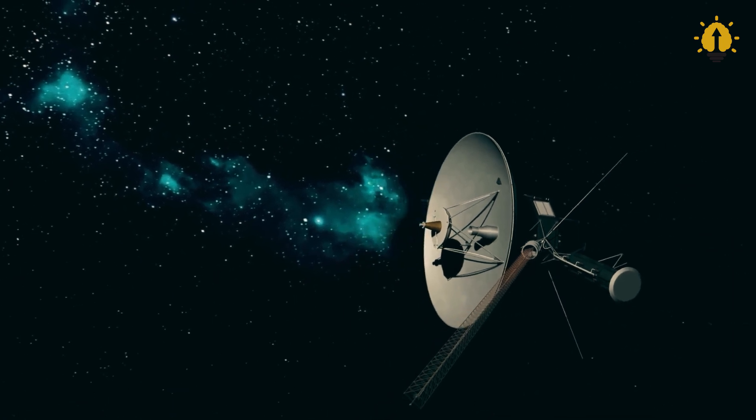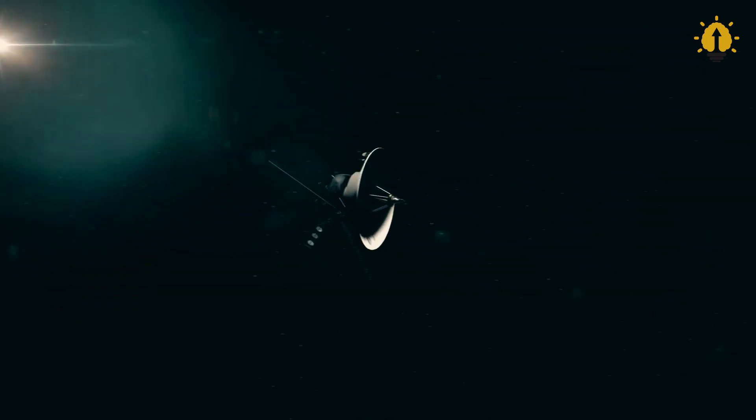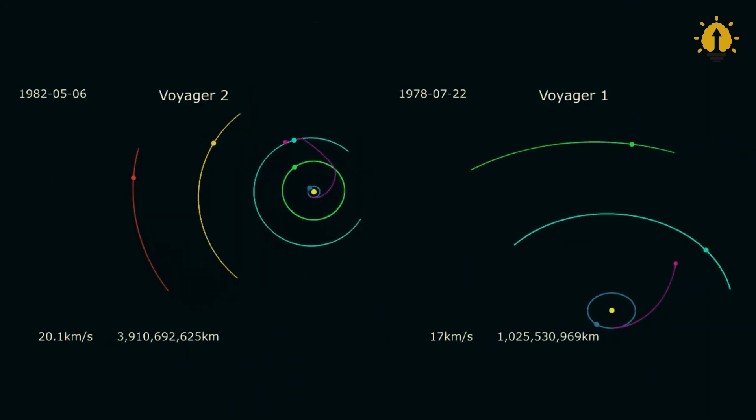Now, as for that one and only visit to Neptune, brace yourself for this fact. In the entire span of human existence, only a solitary spacecraft, Voyager 2, had the privilege of passing close to Neptune's orbit, and that happened way back in 1989.